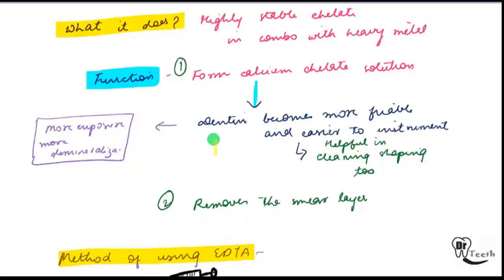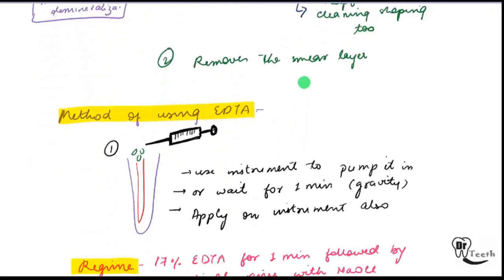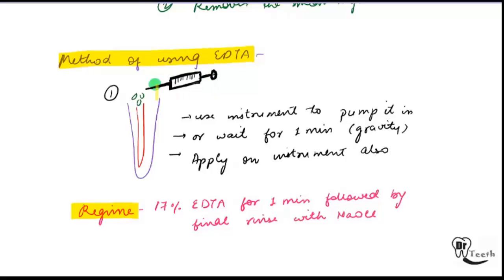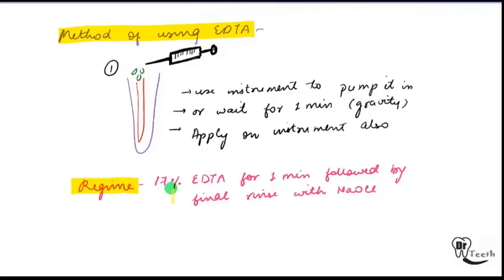The second function of EDTA is that it removes the smear layer. For method of use: first, with a syringe pour 2-3 drops, then you can pump the instrument inside, or wait for one minute, or use gravity, then insert the instrument. In clinical use, it is 17% EDTA for one minute, followed by a final rinse with NaOCl.